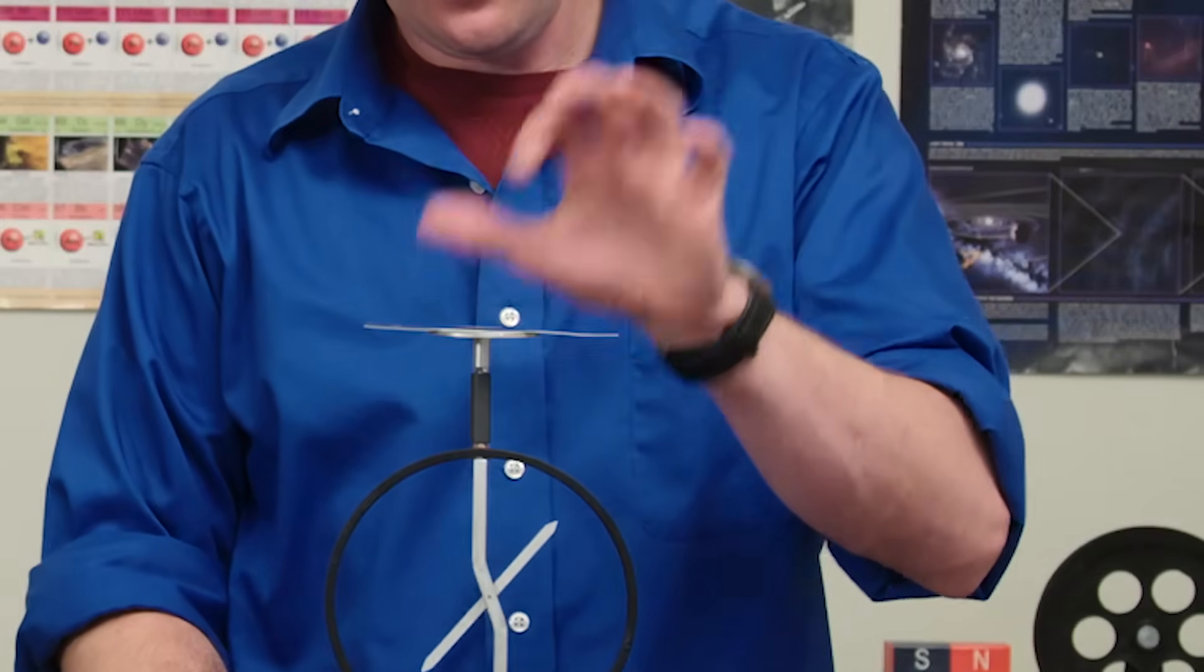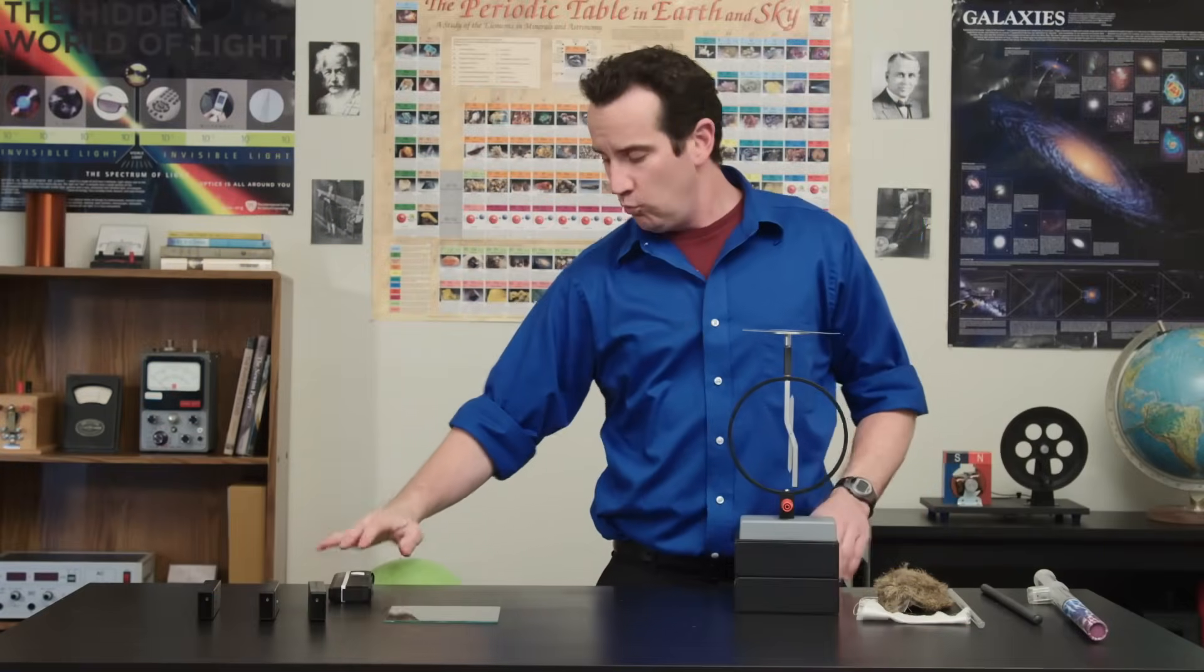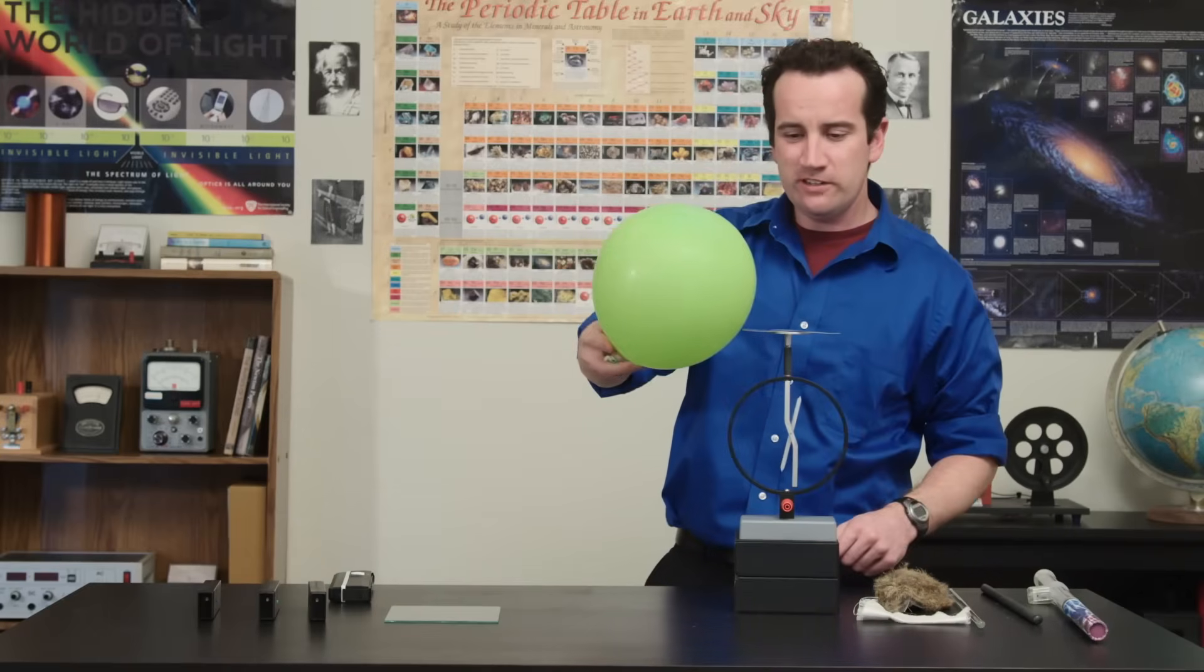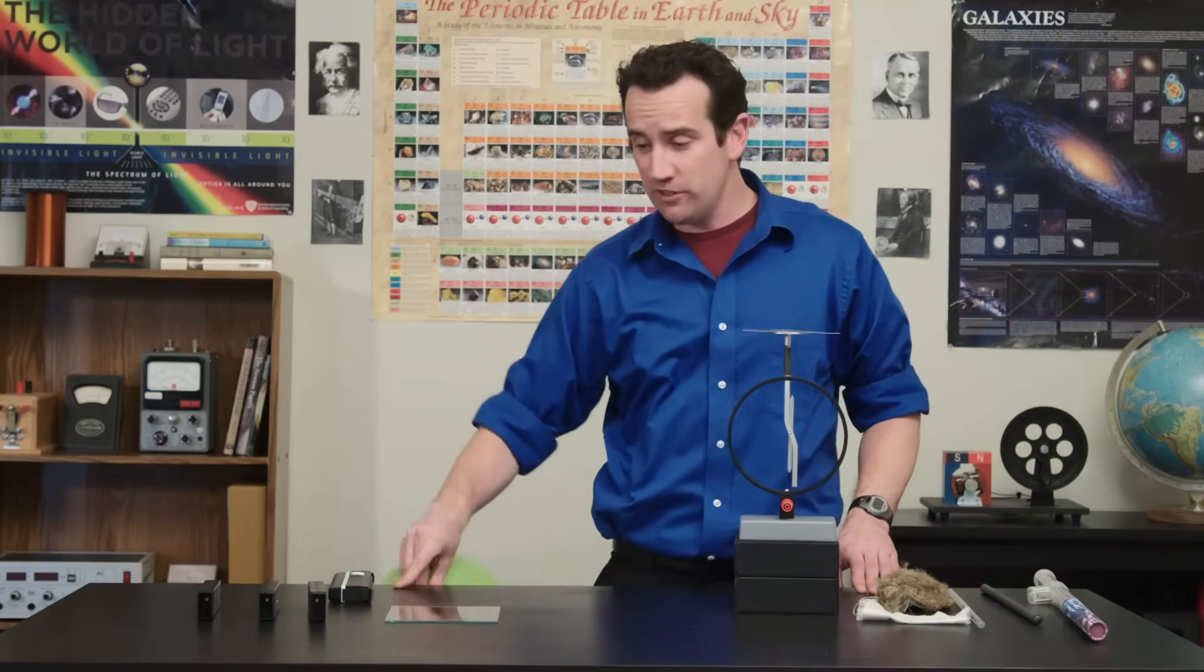This is one way to tell the difference between positive and negative charge. Now you might say, why do I have to use the UV light? Can't I just use regular colors of light to get the photoelectric effect?